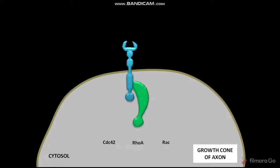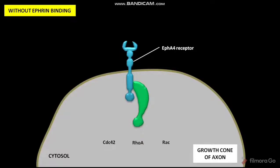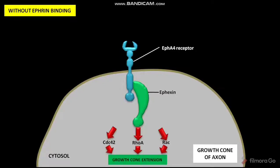Let us consider the case in which the EPH-A4 receptor is present without Ephrin-A1 binding. In this case, Afaxin, stably associated with the cytosolic tail of the EPH-A4 receptor, equally activates Cdc42, Rac, and Rho-A. These three proteins are members of the Rho family. The active Cdc42, Rac, and Rho-A promote growth cone extension.